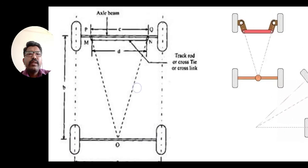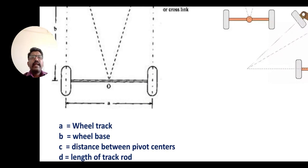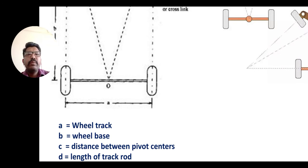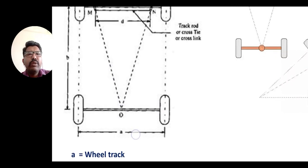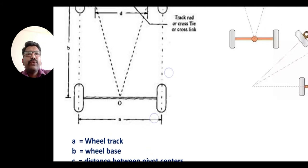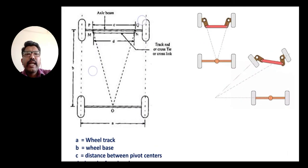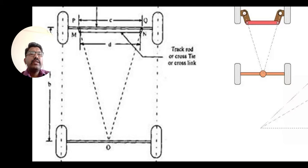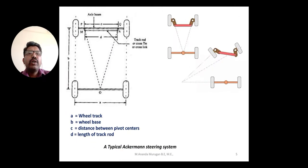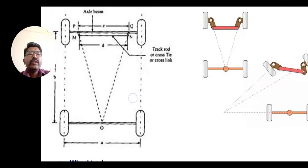Point A is the wheel track, observed from the front or rear of the vehicle. Point B is the center distance between front and rear wheels, viewed from the side of the vehicle. Point C is the pivot center distance — the center point for both track arm linkages. Point D is the length of the track rod, from point M to N.